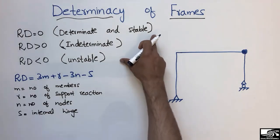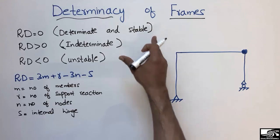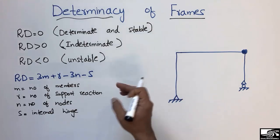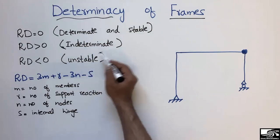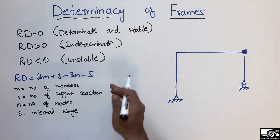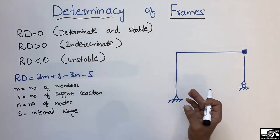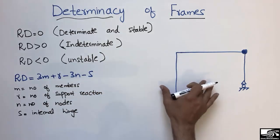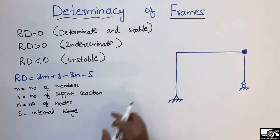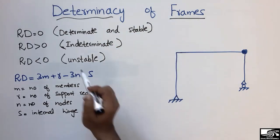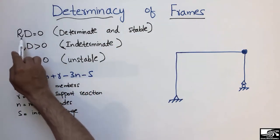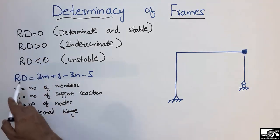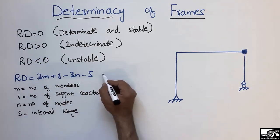In this lecture I will discuss three different categories of frame structure determinancy: whether the frame structure is determinate and stable, indeterminate, or unstable. I will also solve some examples to clarify the determinancy of frame structures. This determinancy is usually found by Rd, which is called the redundancy.